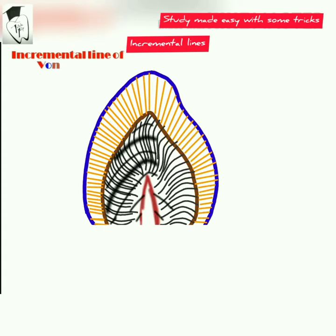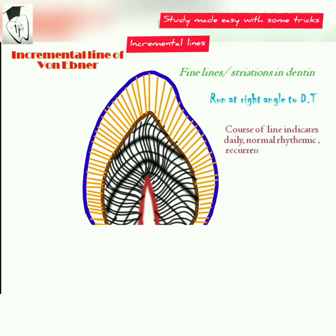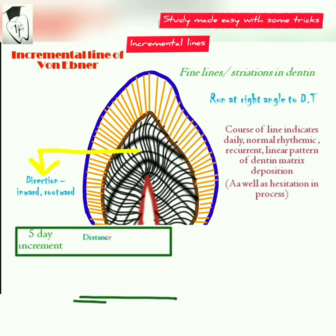Now coming to the incremental lines of Von Ebner. These are fine lines or striations present in the dentine that run at right angles to the dentinal tubules. The course of these lines indicates the daily normal rhythmic recurrent linear pattern of deposition of dentine matrix, as well as the hesitation in the process. The direction of deposition of dentine is inward and rootward in five-day increments.